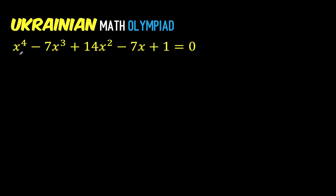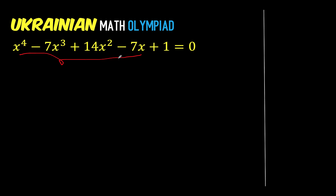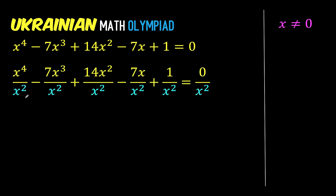Let's solve this problem together. Let's look at these terms with variable x. What will happen if we replace x by 0? These entire 4 terms would become 0, and what's left is 1 equals 0, which is wrong. This means x cannot be equal to 0, which allows us to perform division by x squared.